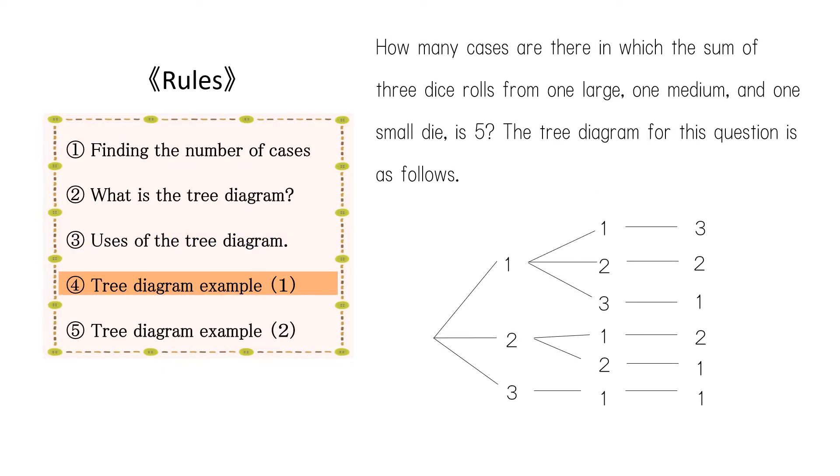Let's look at an example of a problem that uses tree diagrams. How many cases are there in which the sum of three die scrolls from one large, one medium, and one small die is 5? The tree diagram for this question is as follows.